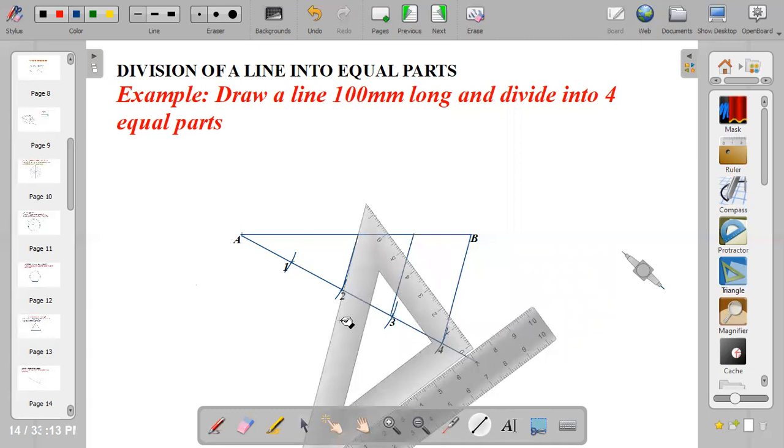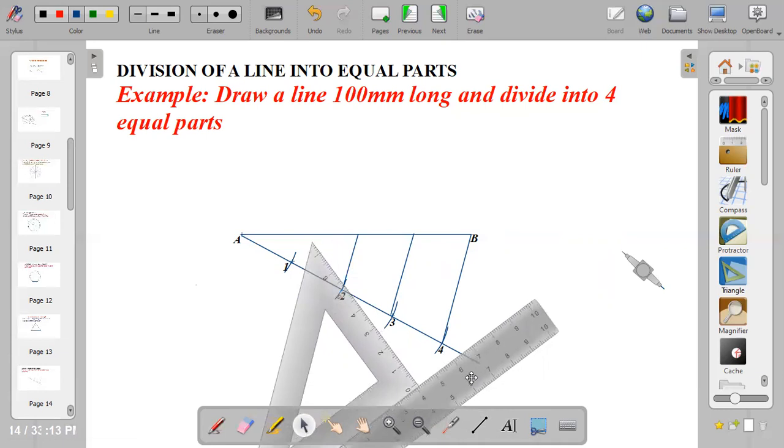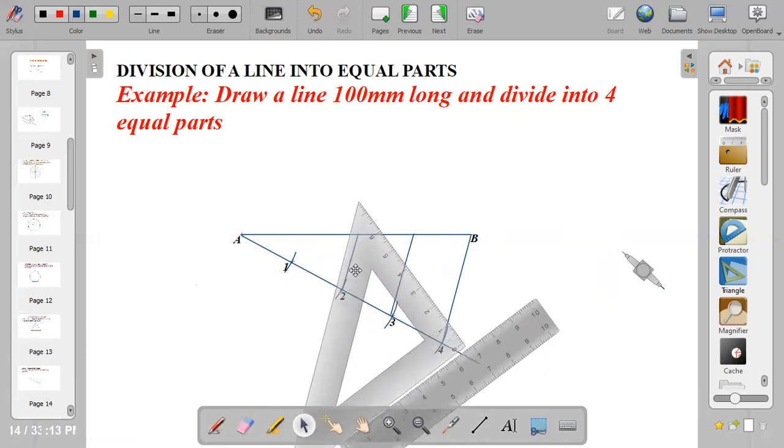So the next one is to move the set square to division one. Division one.